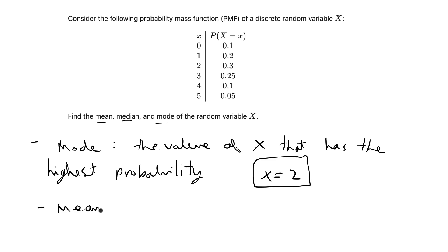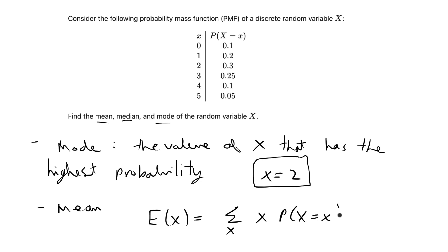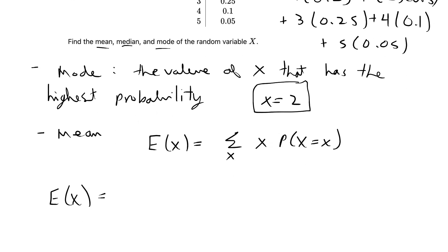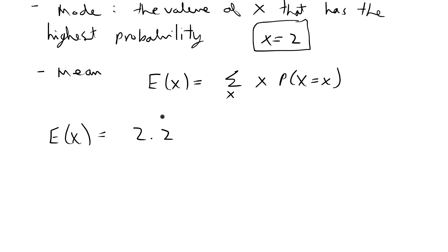Next, I'm going to find the mean, which is also known as the expected value. The expected value of x is the sum of x times its probability for each possible value of x. For this PMF, we calculate: 0 × 0.1 + 1 × 0.2 + 2 × 0.3 + 3 × 0.25 + 4 × 0.1 + 5 × 0.05. Doing that calculation gives us an expected value of 2.2. This is the mean of the random variable x.